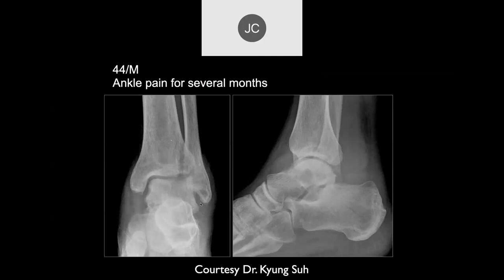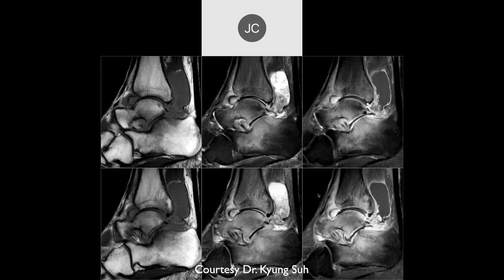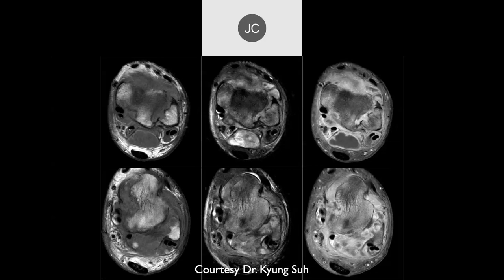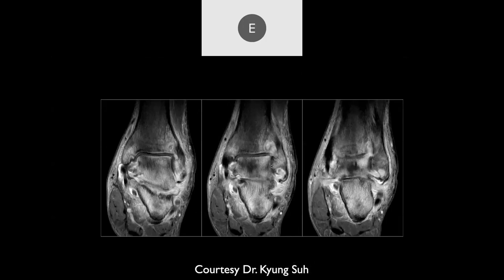A 44-year-old with ankle pain for several months. The subtalar joint region looks a bit sclerotic with the talus and calcaneus, and there's not much fat posteriorly. On MRI with contrast, there's a fluid collection extending posteriorly from the joint space, bone edema, and peripheral enhancement suggesting a big abscess. On PD fat-suppressed images, there's bone edema, probable subchondral disease, and fluid in the tendon sheaths — all likely infected. This was also tuberculosis arthritis.